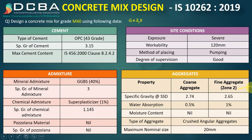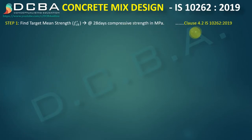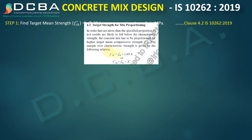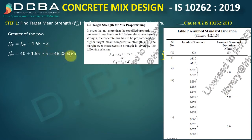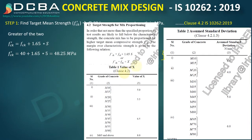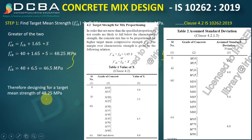Step 1 is finding the target mean strength F'ck, from clause 2.2 of IS10262:2019. We take the higher of two values: FCK + 1.65S = 40 + 1.65×5 = 48.25 MPa (S = 5 from Table 2), and from Table 1 of IS10262 for M40, it is 40 + 6.5 = 46.5 MPa. The greater value, 48.25 MPa, is the target mean strength.